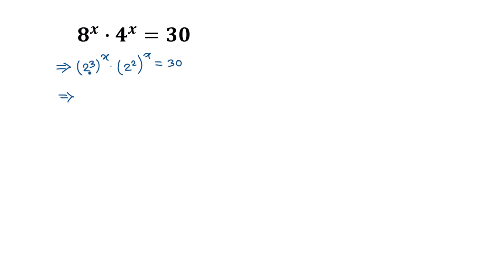Applying the exponential formula, we can write 2 to the power 3 whole to the power x as 2 to the power 3 times x, so it will be 3x. Similarly, 2 to the power 2 whole to the power x can be written as 2 to the power 2 times x, which is 2x. The right side is 30.